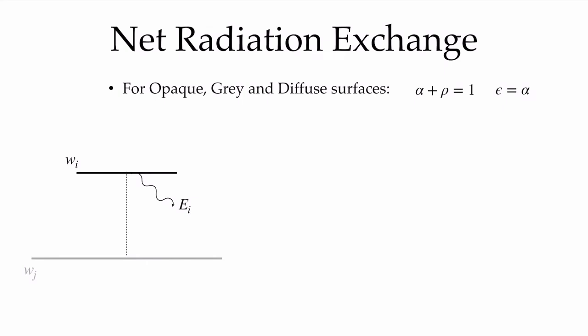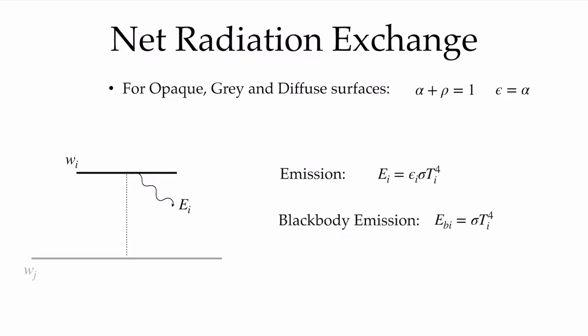Let's start looking at the emission from a surface. We're going to look at opaque, gray, and diffuse surfaces. If it's opaque, the transmissivity is zero, meaning absorptivity plus reflectivity equals one. If it's gray, the total hemispherical emissivity equals the total hemispherical absorptivity, or ε = α. The emission from surface i is given by the emissivity of surface i times the black body emission σTi⁴, or σEbi, which is at temperature Ti.